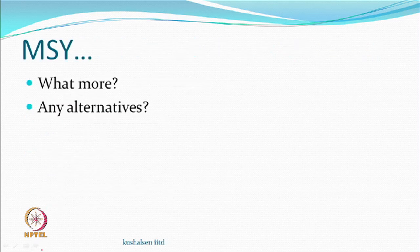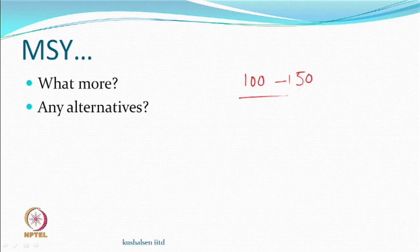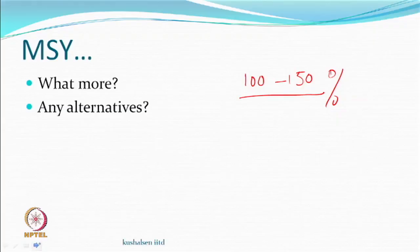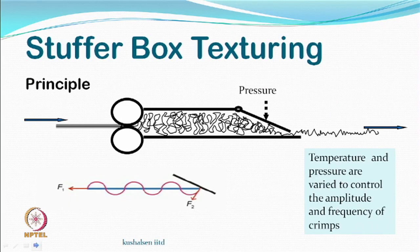Can we use any other technique to get to the modified stretch yarn with reduced stretch? Consider stuffer box texturing — a very simple process. There is a feed roller which pushes the yarn into a box. There is a system, like a flap or door under certain pressure, which prevents the yarn from freely exiting. When the pressure inside builds up, the plug is moved out the other side. You can control the pressure. The yarn is forced in and begins collecting, folding repeatedly, generating crimps.